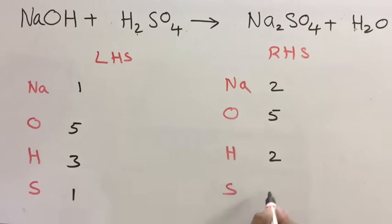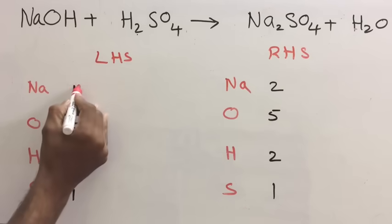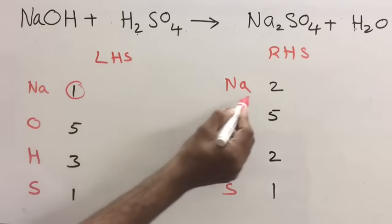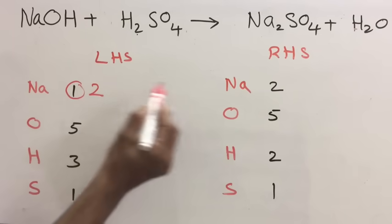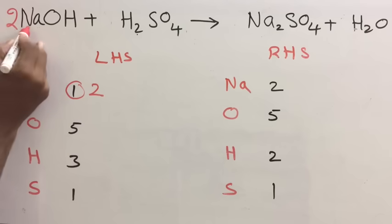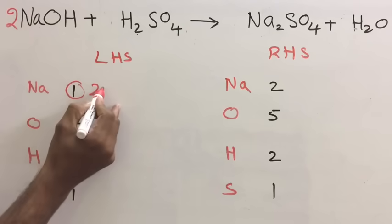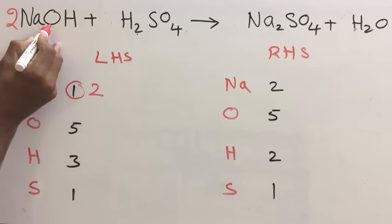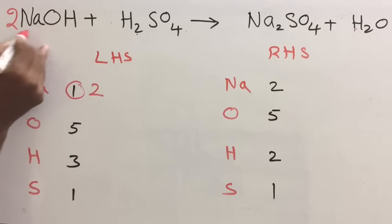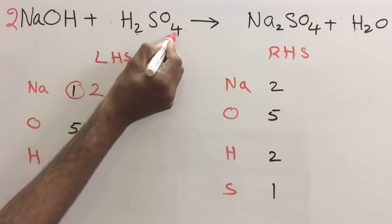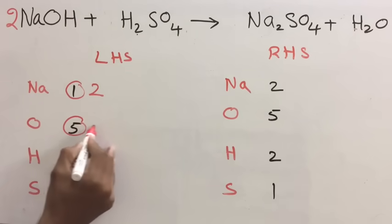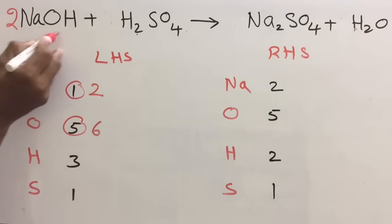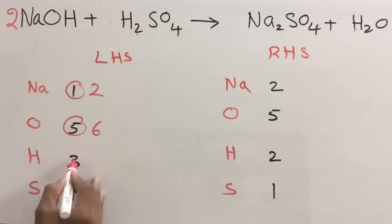Let us balance. On LHS you have one sodium, on RHS two, so multiply with two — write two here, giving two Na. But now oxygen changes: two oxygen here and four there, so total oxygen becomes six, and hydrogen becomes two plus two, which is four.